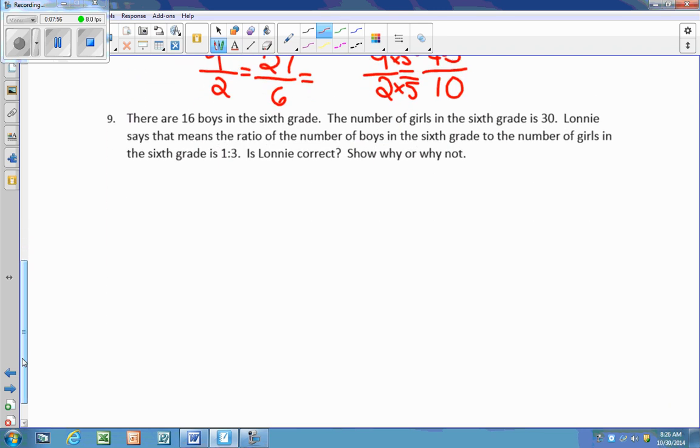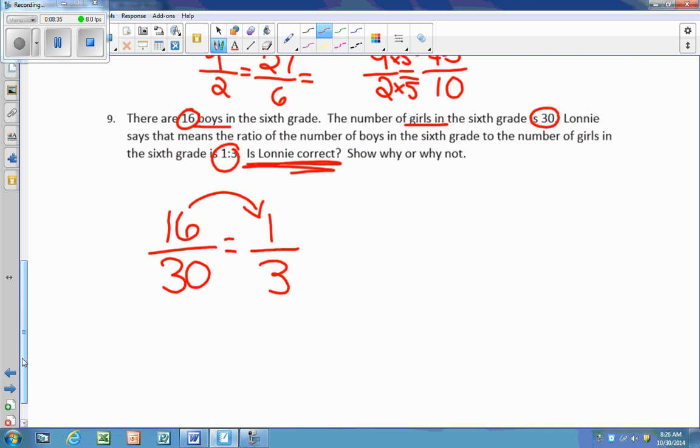Number 9. There are 16 boys in the sixth grade. The number of girls in the sixth grade is 30. Lonnie says that means the ratio of the number of boys in the sixth grade to the number of girls in the sixth grade is 1 to 3. Is Lonnie correct? Show why or why not. So first we're going to write the ratio of boys to girls. So my ratio was originally 16 to 30. And Lonnie wants to know if his ratio of 1 to 3 is correct. So we're going to see if these make equivalent ratios. So I want to see what did I do to get from my 16 to my 1. Well, 16 divided by 16 equals 1. So I'm going to do the same to my 30. 30 divided by 16 does not give me 3.